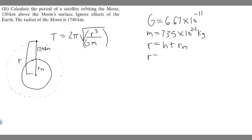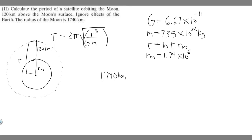The first thing you need to know is the radius of the moon: 1.74 times 10 to the 6th meters. They give us 1,740 kilometers, and if you convert that to scientific notation in meters — multiply by 1,000 — you get 1.74 times 10 to the 6th meters.